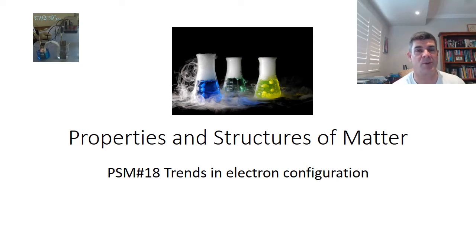Hi students, welcome to the Chem300 series and the topic of properties and structures of matter. This is video number 18 where we're looking at some of the trends that we can notice in the periodic table that relate to electron configuration.